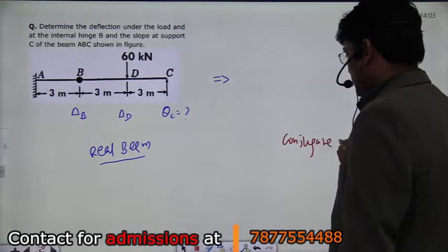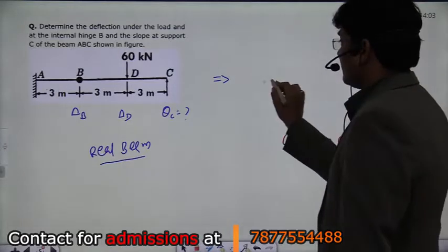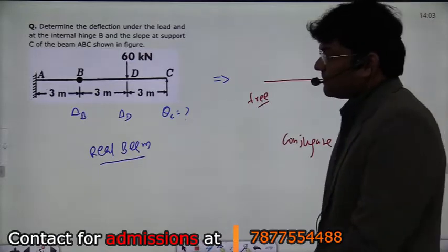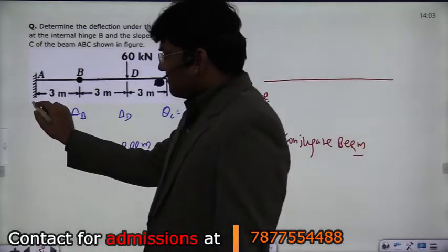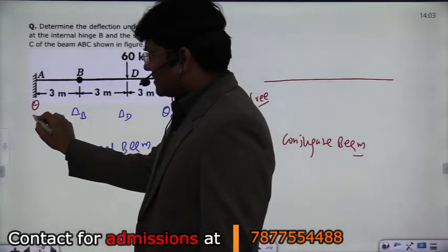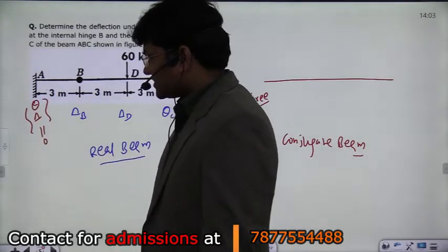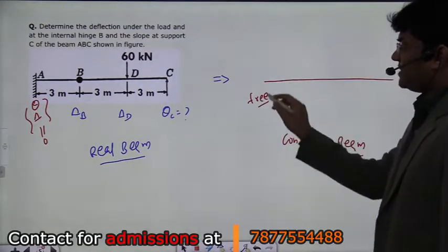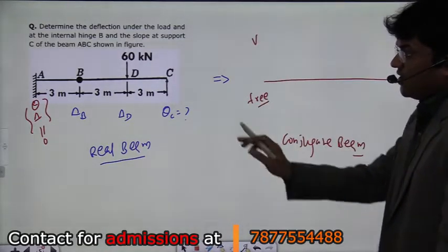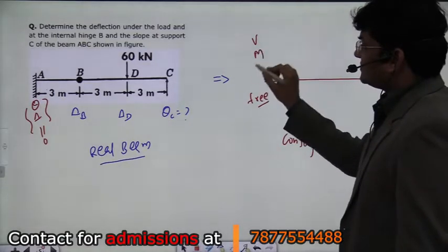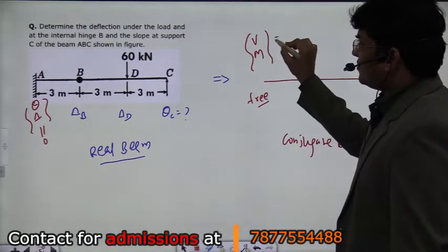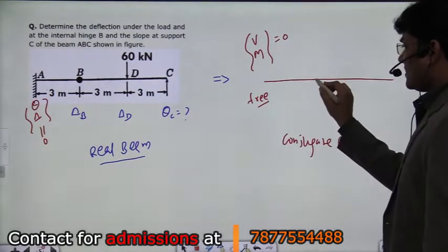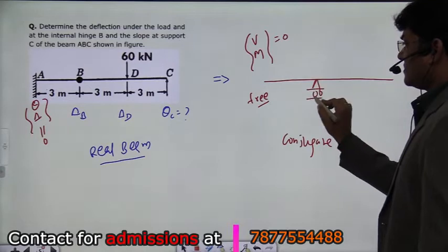The conjugate beam that you will create here: the fixed end becomes free. This is because if you consider delta and theta, both are zero at a fixed end. So theta in the real beam is the shear in the conjugate beam, and delta is the moment. These two values should be zero for a free end. So the fixed end becomes free, and the internal hinge becomes a roller support.